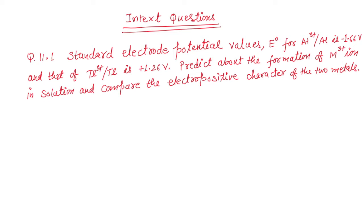First question is standard electrode potential values E° for aluminium 3 plus to aluminium it is given to you that is minus 1.66 volt and that of thallium 3 plus to thallium it is plus 1.26 volt. Predict about the formation of M³⁺ ion in solution and compare the electropositive character of the two metals.